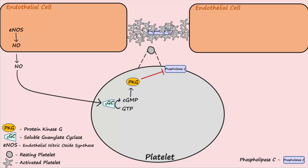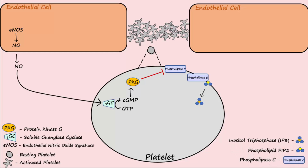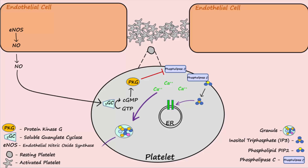In the absence of NO, phospholipase C cleaves the membrane phospholipid PIP2, which leads to the production of inositol triphosphate, or IP3. IP3 then binds to and opens calcium channels on the surface of the endoplasmic reticulum, causing calcium to flood the cell. Intracellular calcium causes exocytosis and granule release. Thus, by inhibiting phospholipase C, calcium release from the ER is inhibited by nitric oxide, and granule release is inhibited.